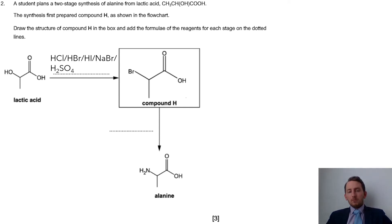Then if I'm going from compound H to alanine, well, I know I need another substitution reaction in which I'm going to react it with a mixture of ammonia in ethanol, and that'll be that there.